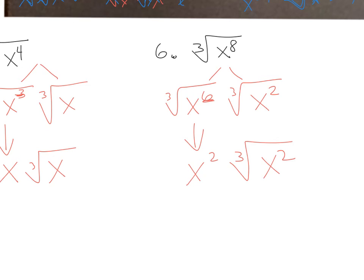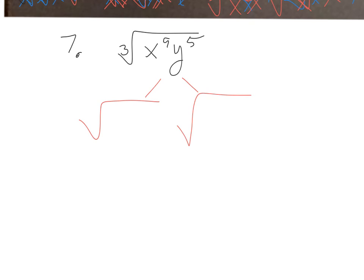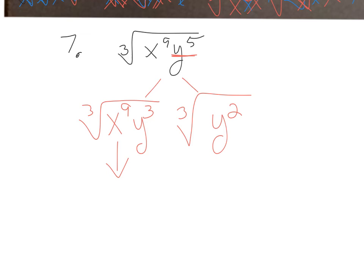Number seven: the cube root of x to the ninth y to the fifth. Separate into two cube roots. x to the ninth — 9 is a multiple of 3, so it's a perfect cube, goes entirely on the left side. For y to the fifth, the largest perfect cube is y to the third times y squared. The cube root of x to the ninth: 9 divided by 3 is x to the third. And 3 divided by 3 is 1, so y to the first, with the cube root of y squared remaining.